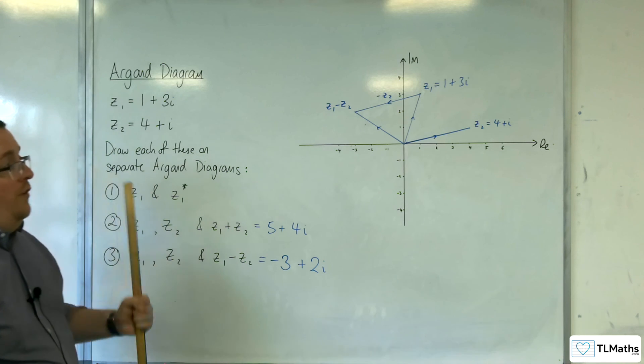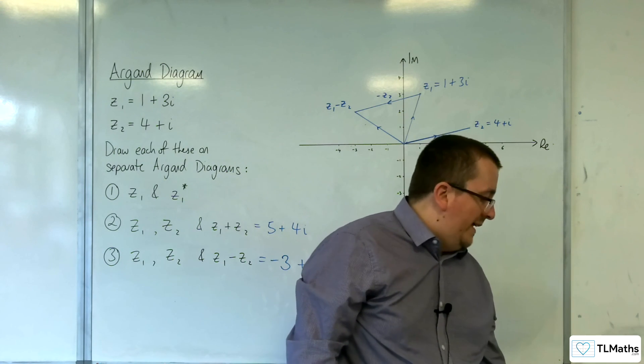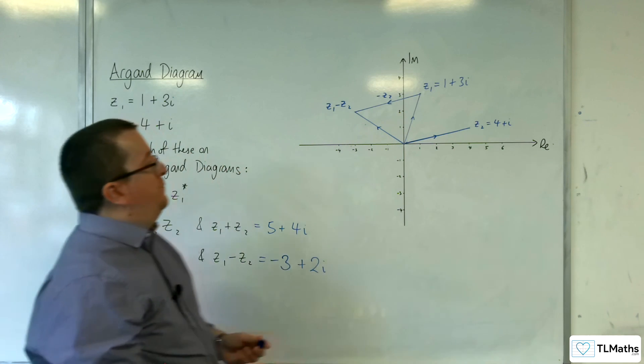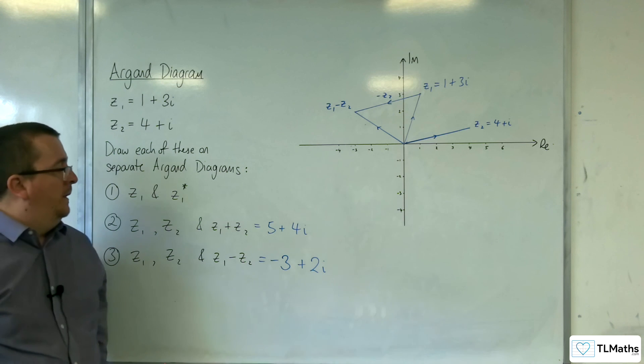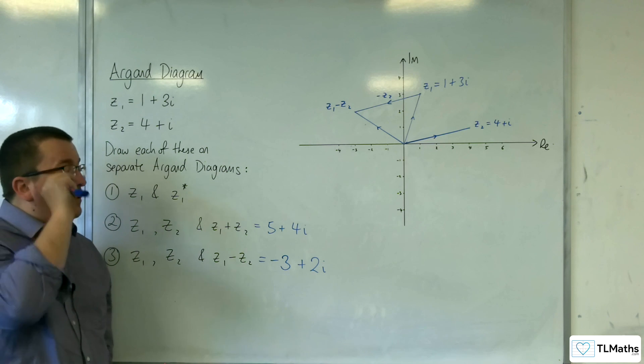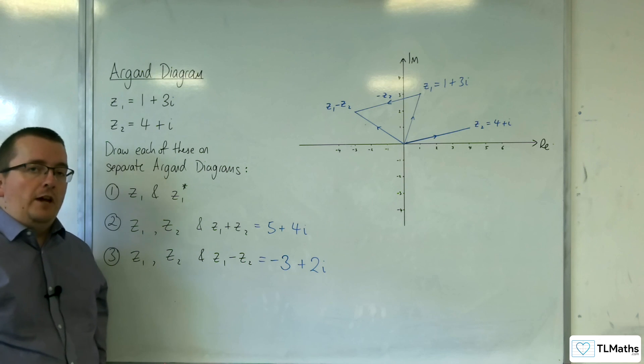So, Z1 take away Z2 gets you to the desired result. And so, this is very much like adding together vectors. In fact, it's working in an identical way. To get that triangle forming. So, that's how you can visualize the sum and difference and also the complex conjugate of a complex number on an Argand diagram.